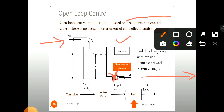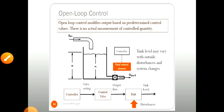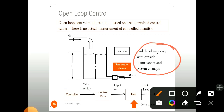This setting is predetermined, so the control valve has its valve setting already done. It gives us output flow and then the tank uses a certain tank level. Suppose some disturbances occur in this tank — the tank level will get decreased or increased. This tank level we cannot control in Open Loop System because we are not using a controller here. Open Loop System does not use any controller, and that is why the tank level cannot be controlled. Only input is given and output is produced, because we have set the control valve already in a predetermined way. It is already set and we cannot change that setting. That is why the tank level may vary with outside disturbances and system changes.